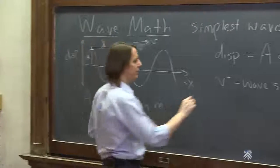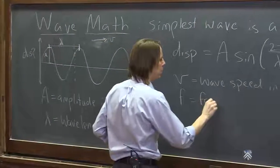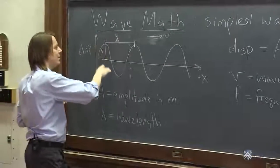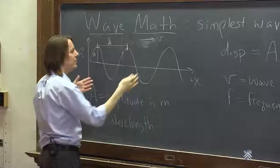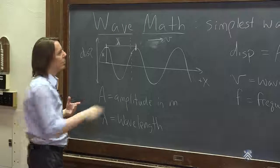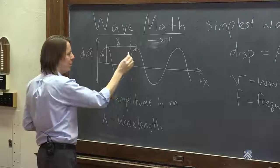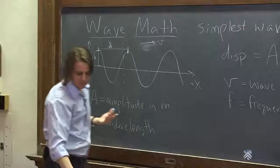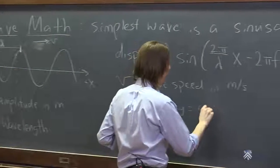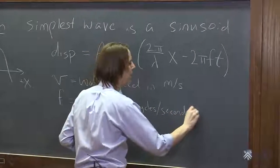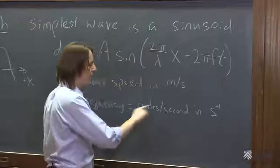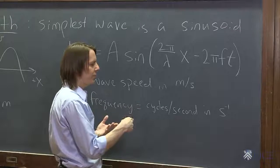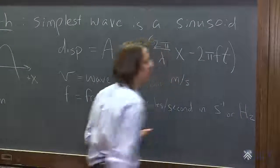We also have f, which is the frequency. The wavelength describes how much the wave varies in space; the frequency describes how much it varies in time. If you were to sit at one position and watch the wave go by, the frequency would be how many cycles pass by in a second. The unit is inverse seconds, because cycles aren't really a unit — it's just counting — so frequency is measured in inverse seconds, also known as hertz.